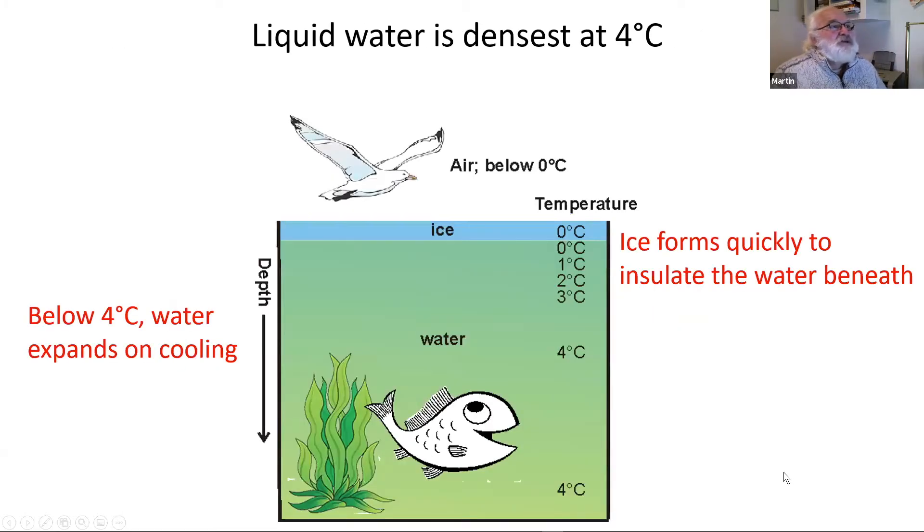Water is at its densest at four degrees, just above what we think of as freezing temperature. And this allows ice to form quickly on the top and it insulates the water underneath.